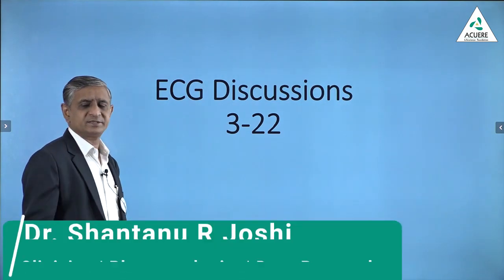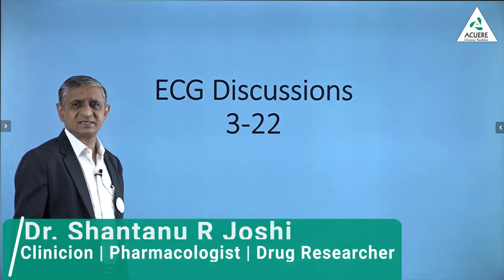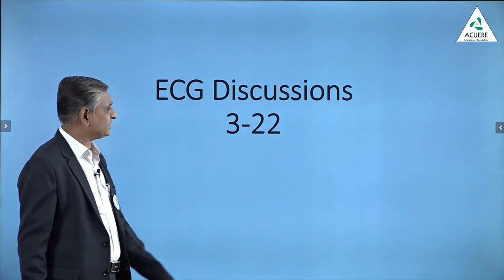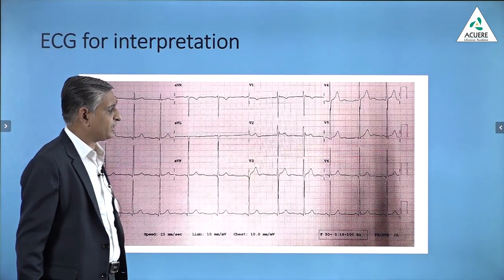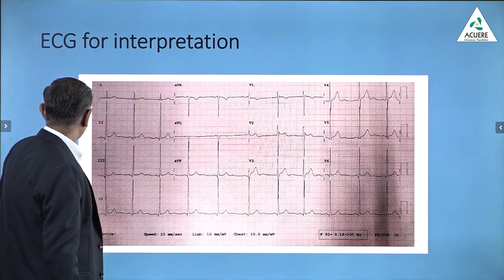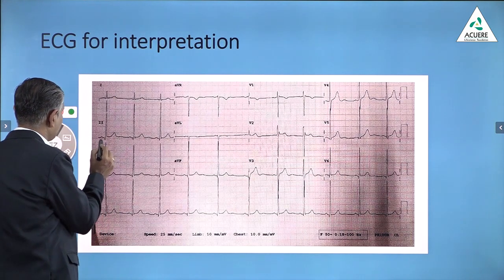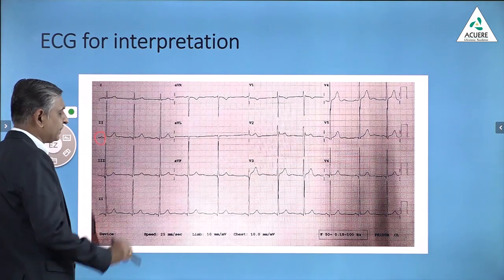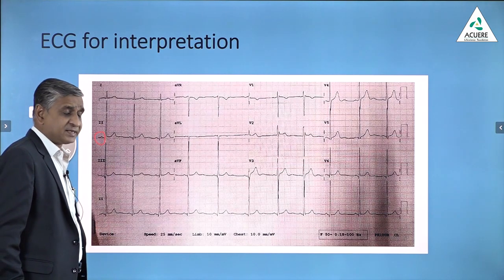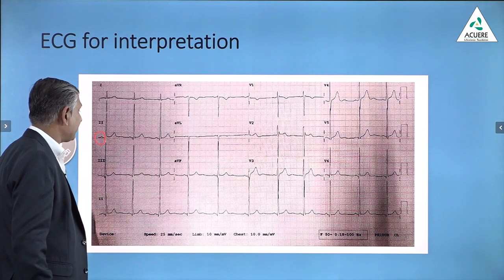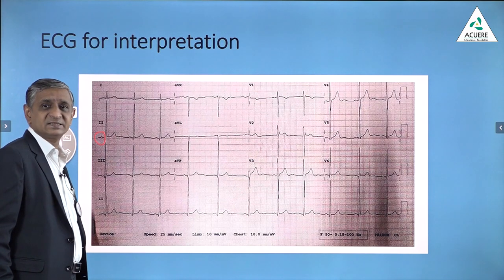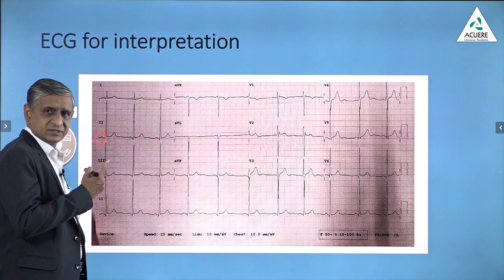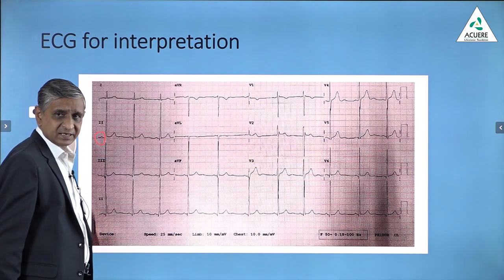Dear students, now we will discuss about a new ECG. This is the third ECG of 2022. As usual, you have to find out the P wave. One should find out the P wave properly in lead 2. And if it is present and normal, say that the heart is beating in sinus rhythm. In this ECG, the heart is beating in sinus rhythm.